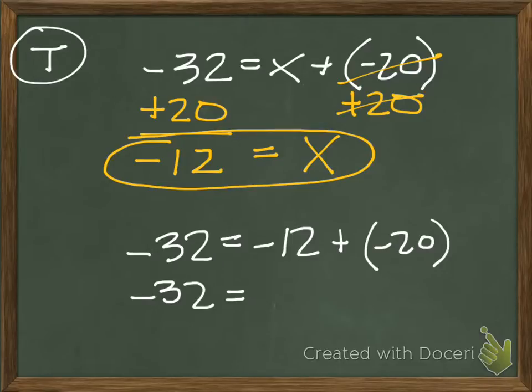Same sign, add and keep. So negative 12 and negative 20 do have the same signs. So we add them together and keep the sign. So 20 plus 12 does equal 32, and we keep the sign, negative 32. So the sentence or the equation does make sense. So my answer, again, for x is negative 12.